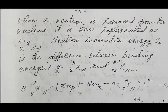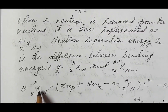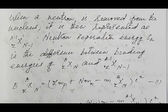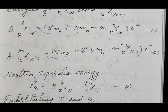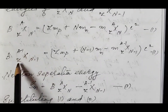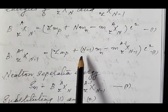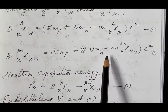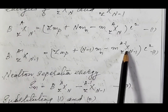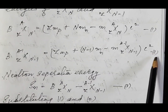Neutron separation energy S_N is the difference between the binding energies of nucleus X(A,Z,N) before removal of the neutron and X(A−1, Z, N−1) after removal. The binding energy of the first nucleus X(A,Z,N) is: B₁ = [Z·M_P + N·M_N − mass of X(A,Z,N)] × C² — call this equation 1. After removal of the neutron, the binding energy is: B₂ = [Z·M_P + (N−1)·M_N − mass of X(A−1, Z, N−1)] × C² — call this equation 2.